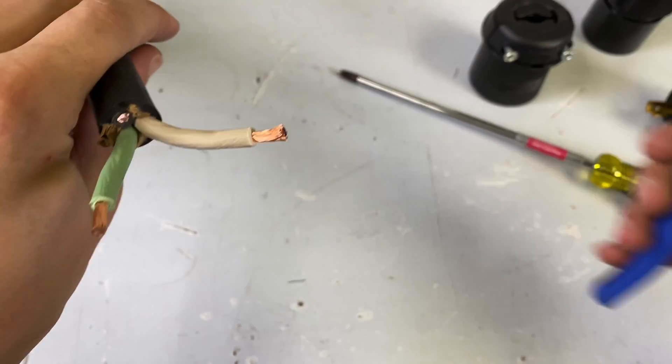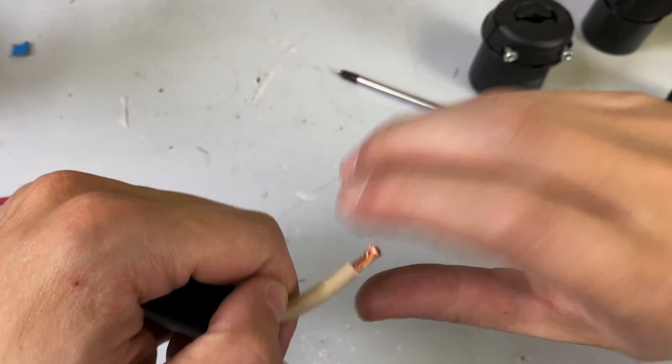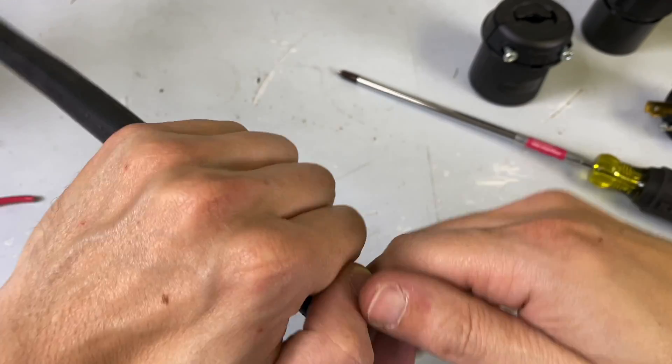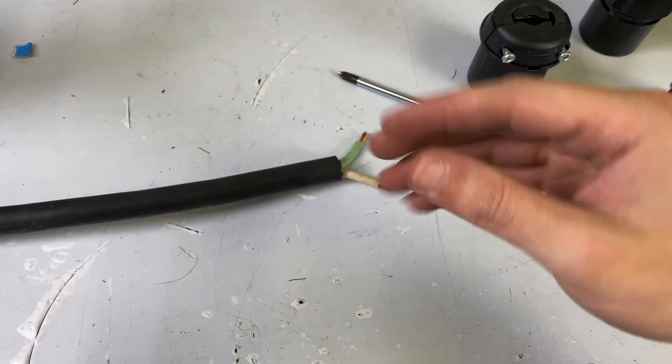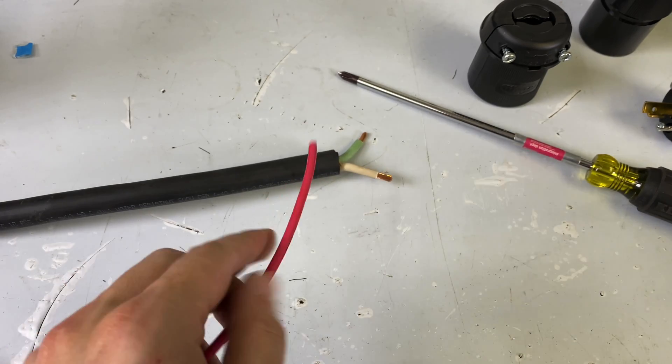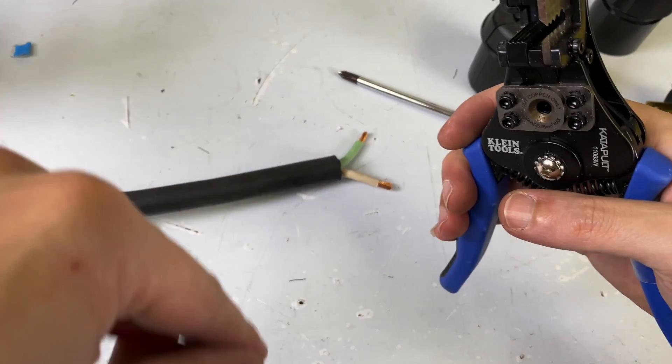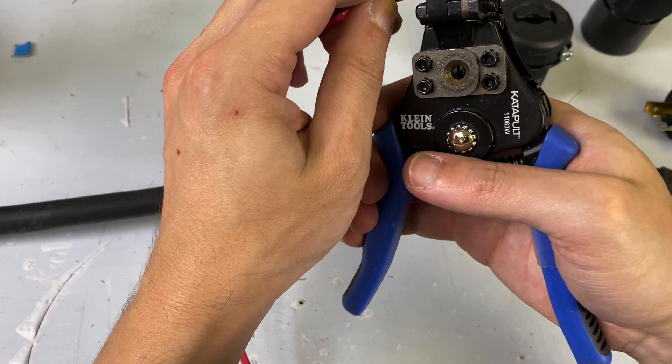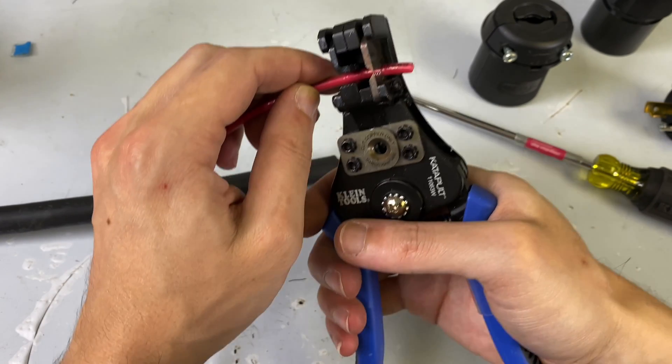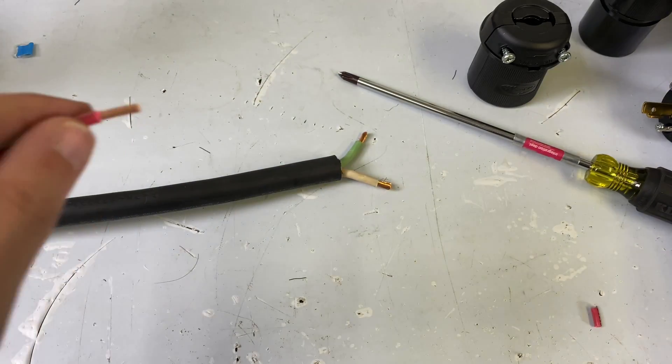And then because we build a lot of cables here and a lot of boxes and things like that, I have raw in-wall cable that we use. So I just grabbed some of this off of the reel. So this is also a 10-gauge cable. So I'm just going to strip this guy down.